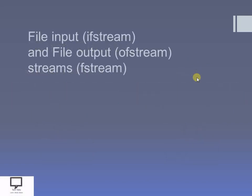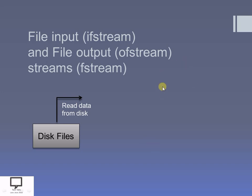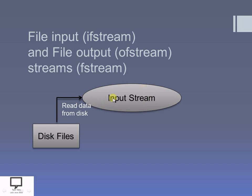The next slide explains how the file input/output streams are useful while performing operations on a file, or in other words, how to use these streams in file handling. Let's consider I have a file and I want to perform a read operation on it. I will read the data from the file with the help of the input stream, meaning ifstream.